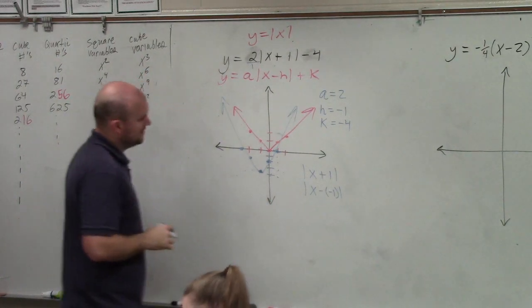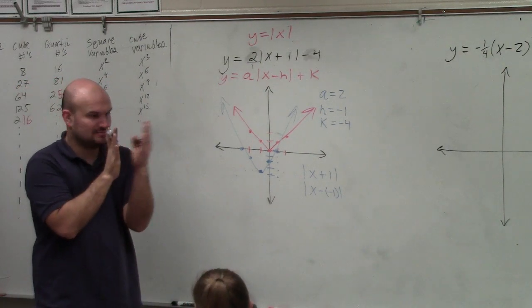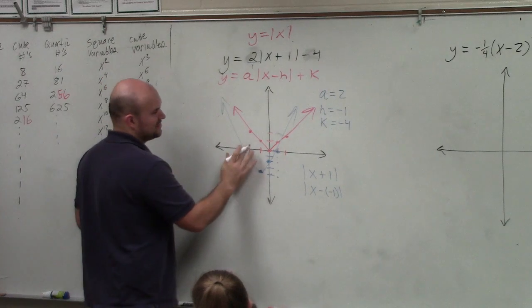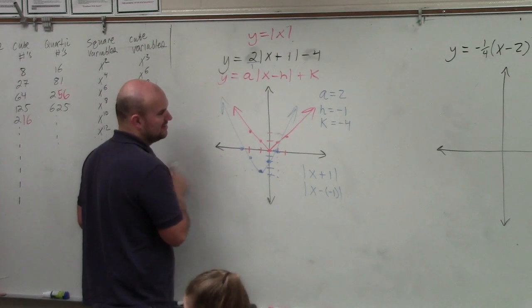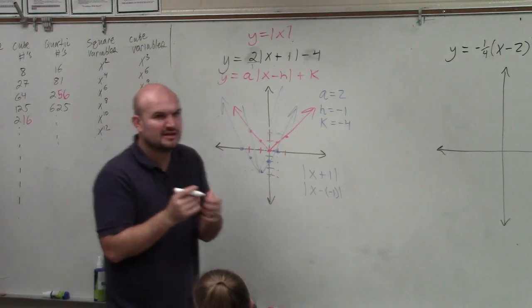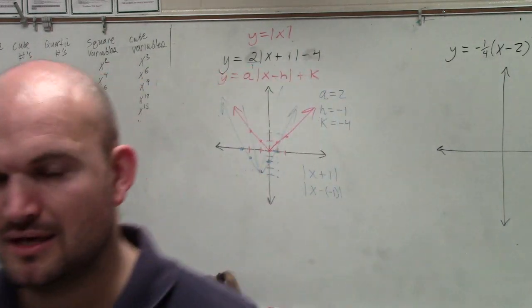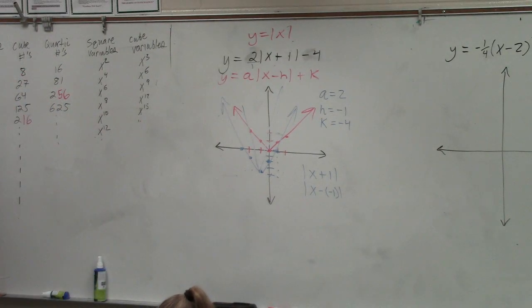Now my graph is not really that good of a graph, but this graph is actually supposed to look skinnier. So I probably should have done my scaling a little bit better. But this graph should look like it's skinnier than the other version. My scaling is just not really that good. But the 2 stretched it vertically, so it should be skinnier than your other graph.